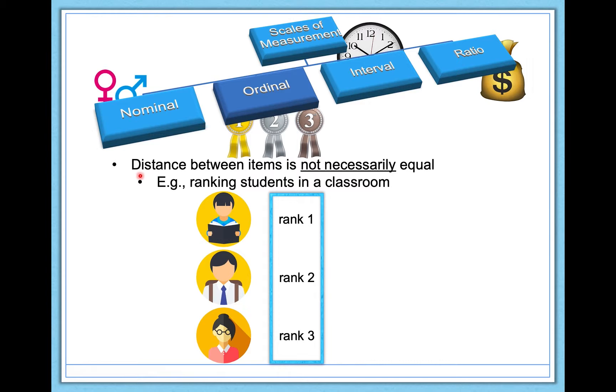Let's illustrate that by looking at how these students are actually performing in the class. My first ranked student is getting a 99% in the class, my second ranked student is getting a 91%, and my third ranked student is getting a 90%. Hopefully you can see here that the distance between these different students is not necessarily equal. They're ordered but not necessarily equal. Between rank one and rank two is an 8% difference, but between rank two and rank three is only a 1% difference. And this is where the interval scale of measurement is going to come into play.